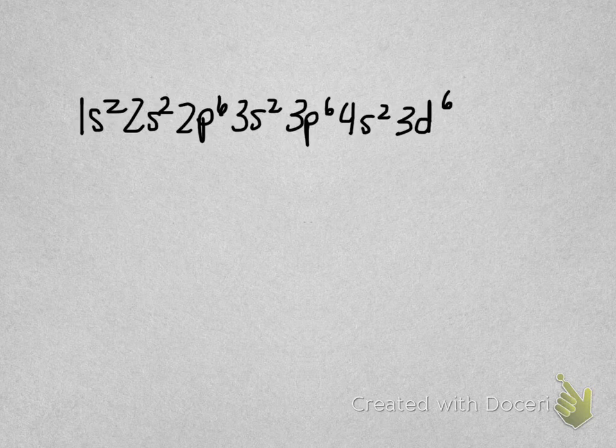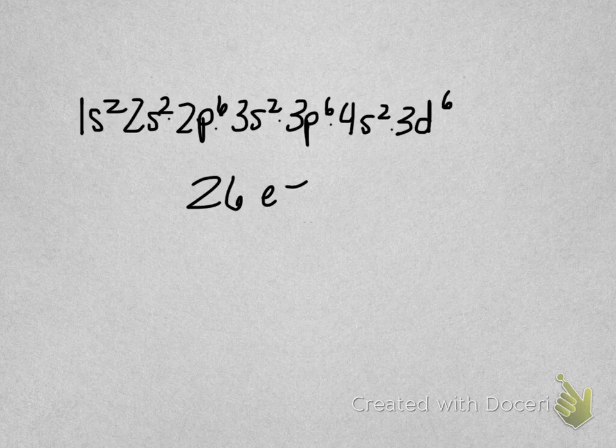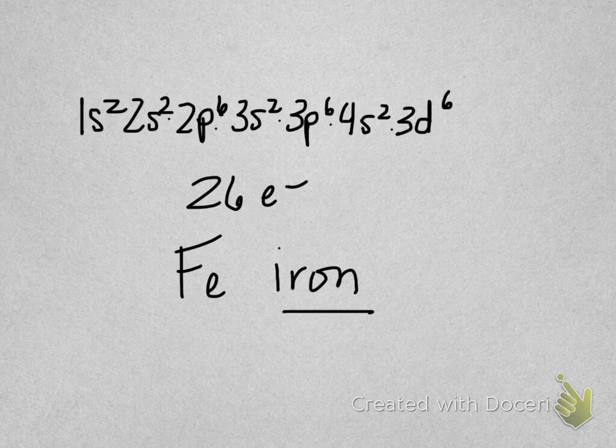I'm going to do the same thing I did in reverse. I'm going to add up my superscripts, 2, 4, 10, 12, 18, 20, 26. This is something with 26 electrons. What is it? It's our old friend, iron. Go ferrous metals.